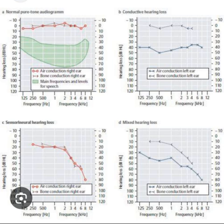Individuals who hear better than average may have thresholds lower than zero decibels. Hearing thresholds up to 25 decibels are considered normal variability. Variability is also expected when testing the same patient due to differences in audiometry equipment, examiner, and patient factors. For this reason, a change in hearing threshold of 5 decibels is thought to be within the standard error of measurement.